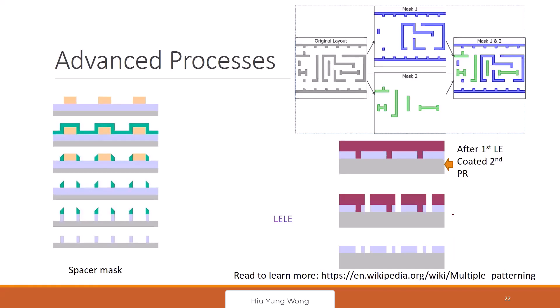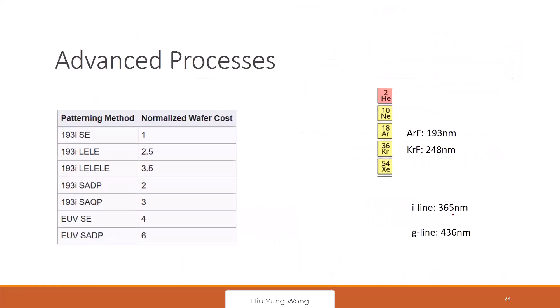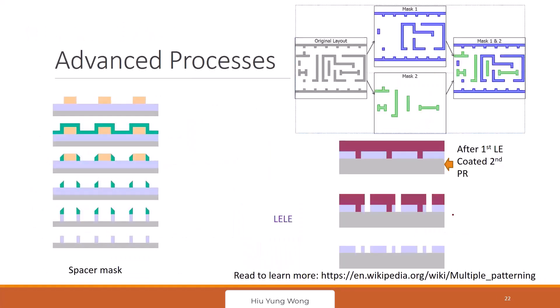Nowadays, we cannot go lower because, I will talk about that. But for the lights, the shortest we are using, actually I even forgot, it's 193 nanometer. That is UV light. And how can you pattern a 10 nanometer structure with 193 nanometer wavelength? It's impossible.